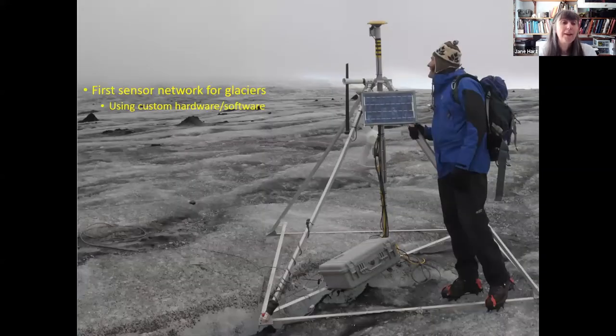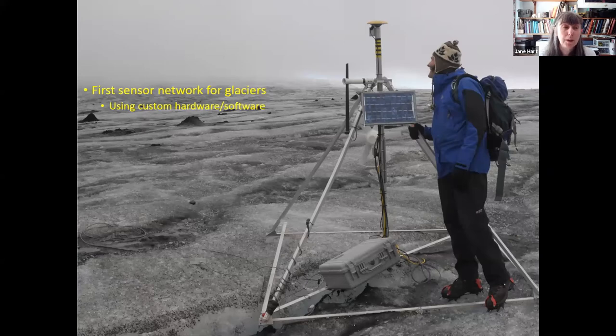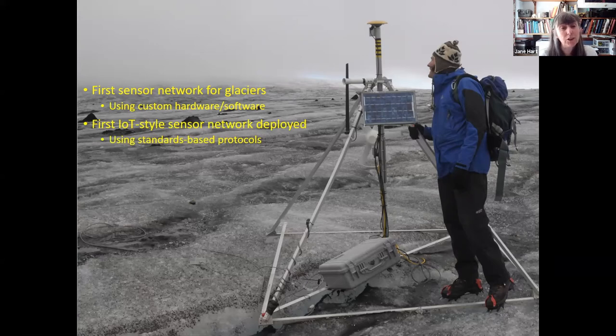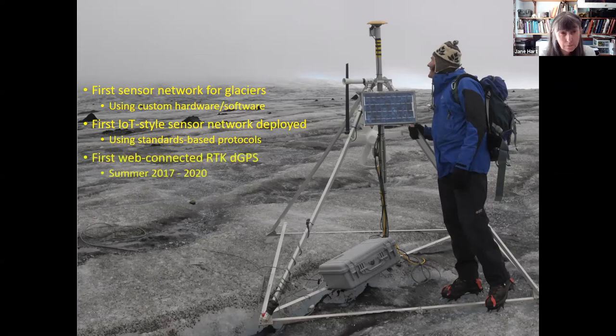So what do we find from this work? Well, we found that we developed this first sensor network for glaciers using custom hardware and software. We then developed this IoT style sensor network, which uses standards-based protocols. And then we developed this web connected RTK DGPS system. And although we've developed it for a glacier, you could use this in many other environmental systems. And it worked for three years. And we're very pleased about that.